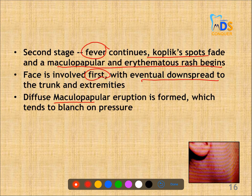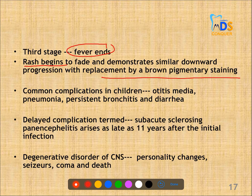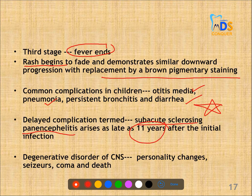The diffuse maculopapular eruption tends to blanch on pressure. In the third stage, fever ends and the maculopapular rash begins to fade, replaced by brown pigmentary staining. Common complications in children include otitis media, pneumonia, persistent bronchitis and diarrhea. A delayed complication is subacute sclerosing panencephalitis, which arises up to 11 years after the initial infection. This degenerative disorder of the CNS causes personality changes, seizures, coma and death.